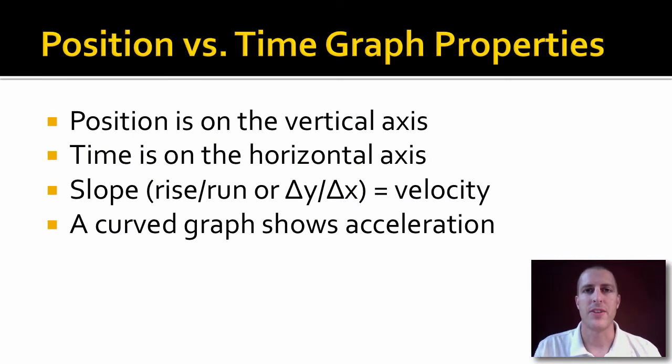Let's start with position time graphs. These are graphs of position versus time. Position will be on the y-axis, time will be on the x-axis. Some key parts of that: the slope of the line that you see on the position time graph is your velocity. This is useful because a lot of times we're going to try to find the velocity from our position time graphs.